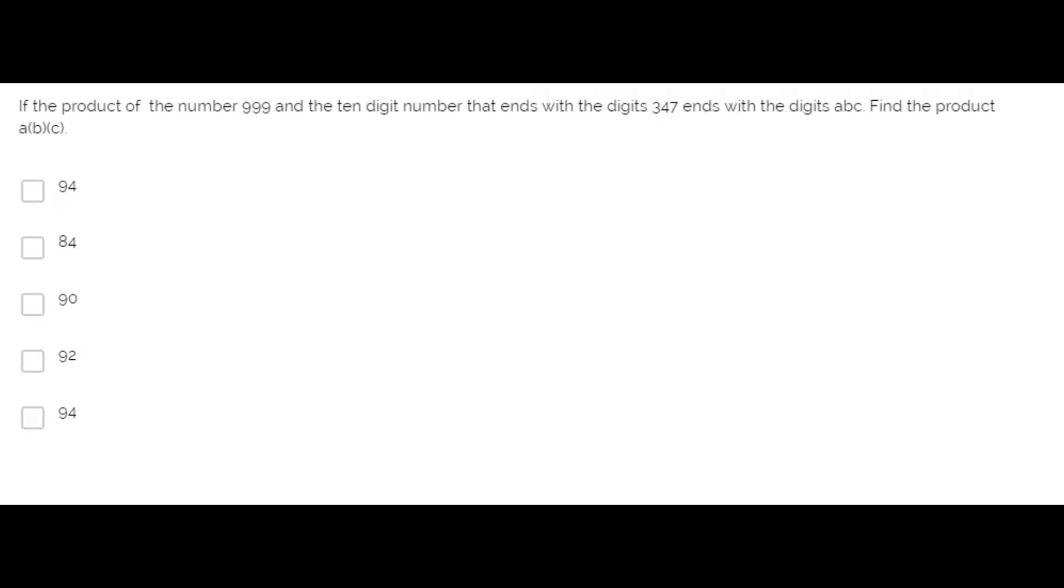If a product of a number 999 and a 10-digit number that ends with the digits 3147 ends with the digits ABC, find the product of A times B times C.